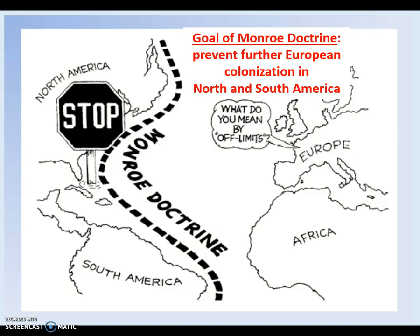James Monroe becomes president and wants to stop Europe from getting involved in North and South America — keeping them on the other side of the ocean. He creates a document called the Monroe Doctrine. The goal of the Monroe Doctrine is to prevent Europe from colonizing North and South America. Countries in South America and Mexico were breaking free from their European colonizers, and Monroe wanted to stop Europe from re-colonizing the Western Hemisphere. The message was simple: stay over in Europe.